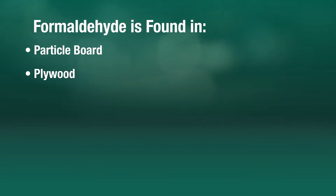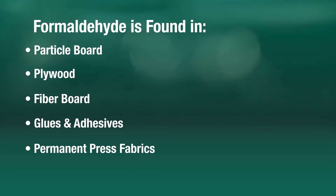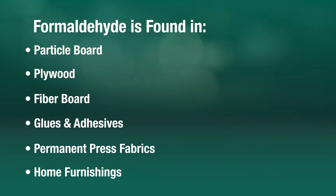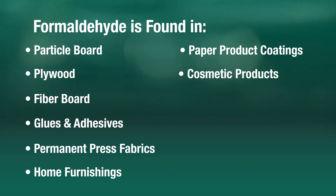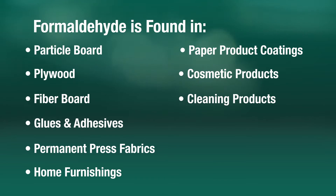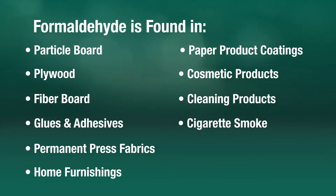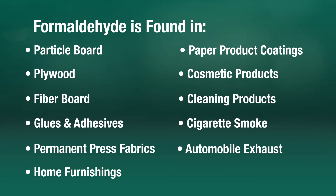The chemical has a wide number of uses in building materials and household products. It can be found in things like particle board, plywood, fiberboard, glues and adhesives, permanent pressed fabrics, home furnishings, paper product coatings, cosmetic products, cleaning products, cigarette smoke and automobile exhaust.